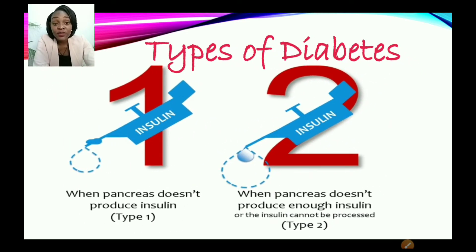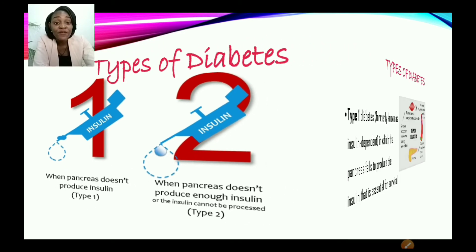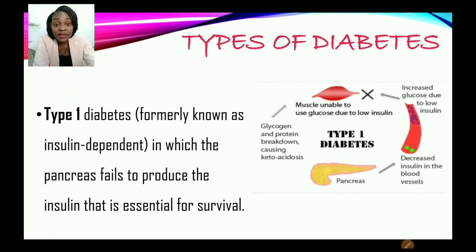Now, let us move on to types of diabetes. We're going to look at two types in today's session: type 1, which is when the pancreas does not produce the insulin, and also type 2, when the pancreas doesn't produce enough insulin or the insulin cannot be processed — we may say the insulin is ineffective. So we have two types of diabetes: type 1 and type 2.